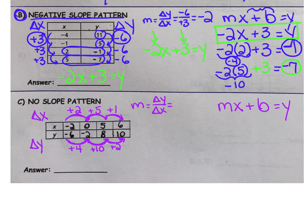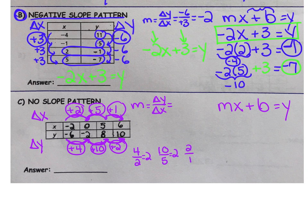Take, however, each delta Y and put it over its delta X. 4 over 2. Then 10 over 5. And finally, 2 over 1. If we reduce each of these, we see we have a consistent slope of 2. So, there is a slope when it sort of looked like we weren't going to get a consistent pattern.